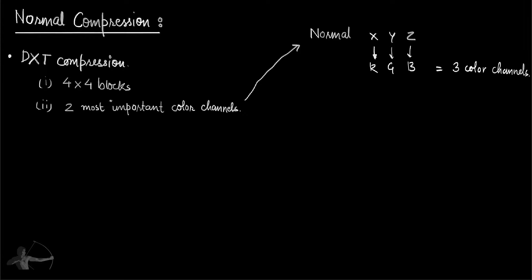So what we will try to do here is we will try to use only two channels. One thing we know about the normal value is that it's a normalized vector value, which means if it is a normalized vector value, its magnitude is 1.